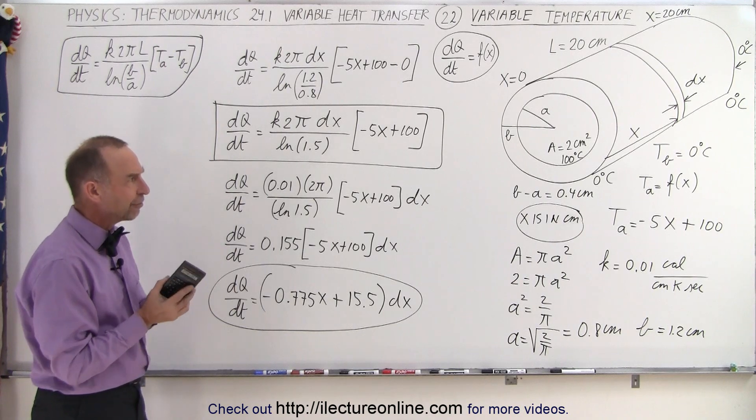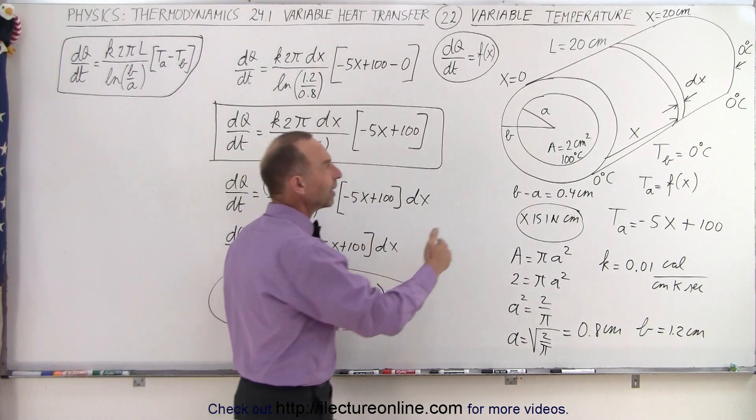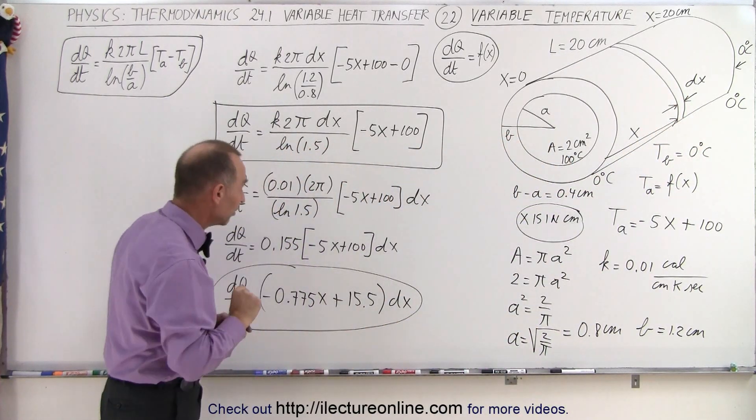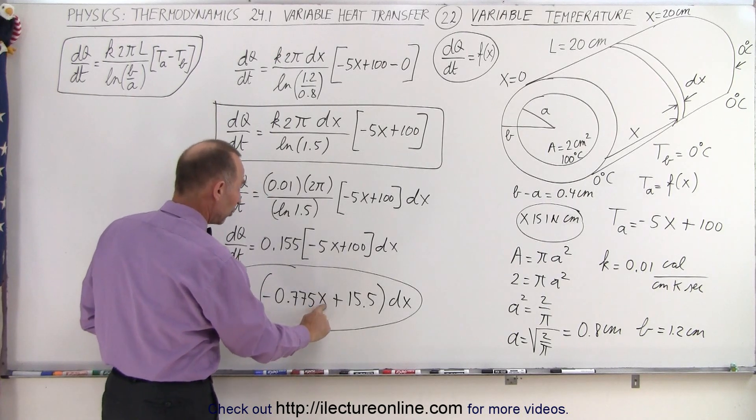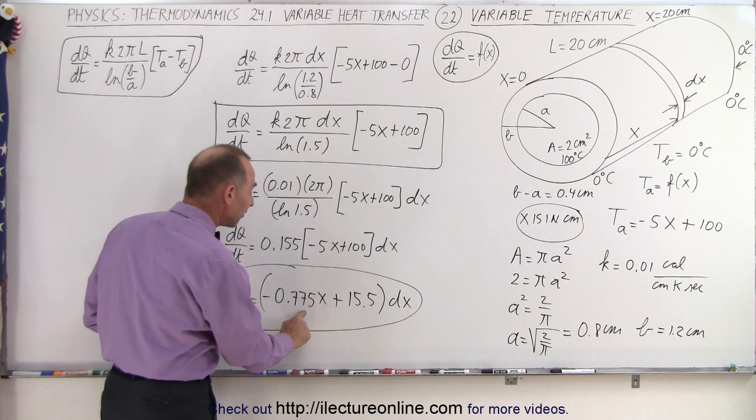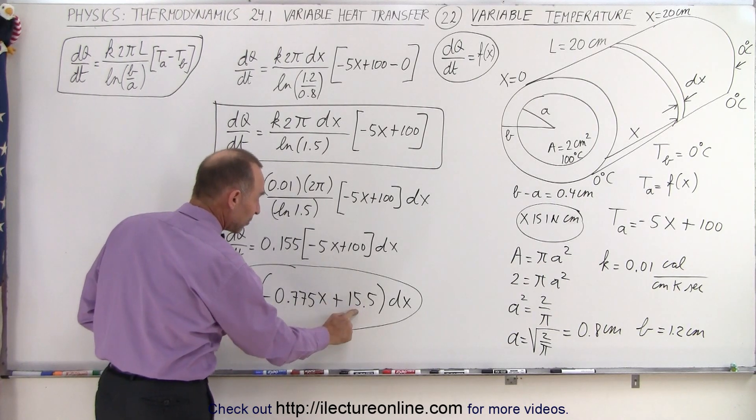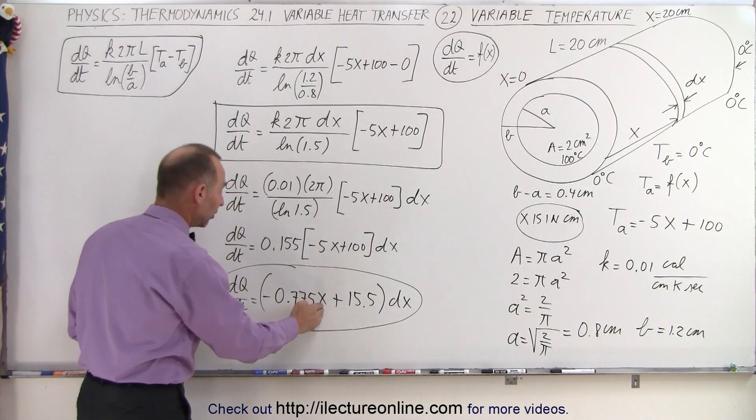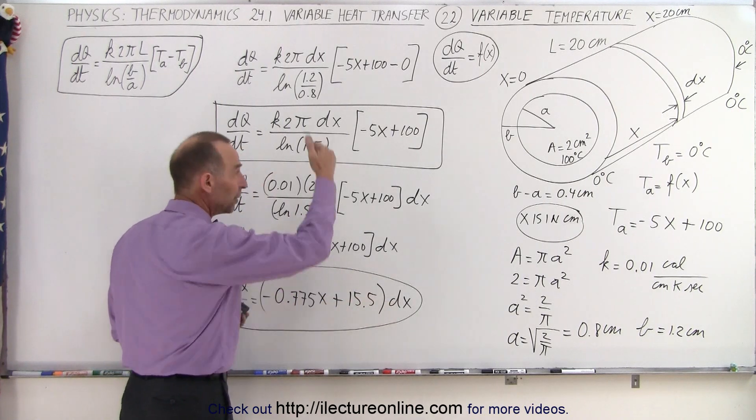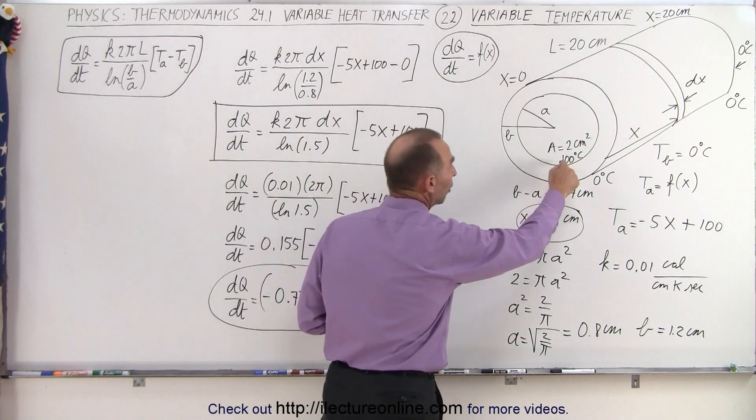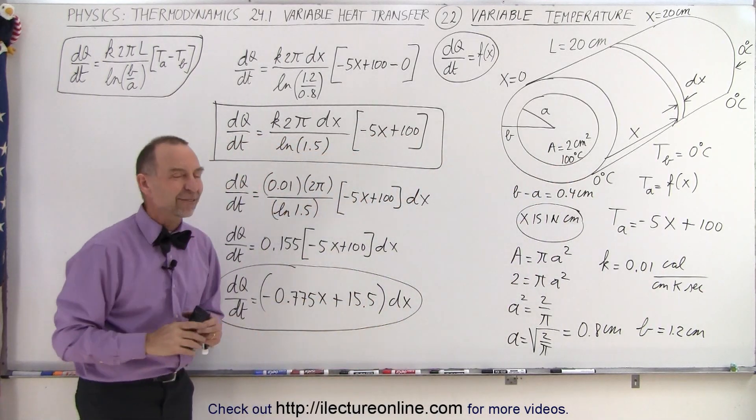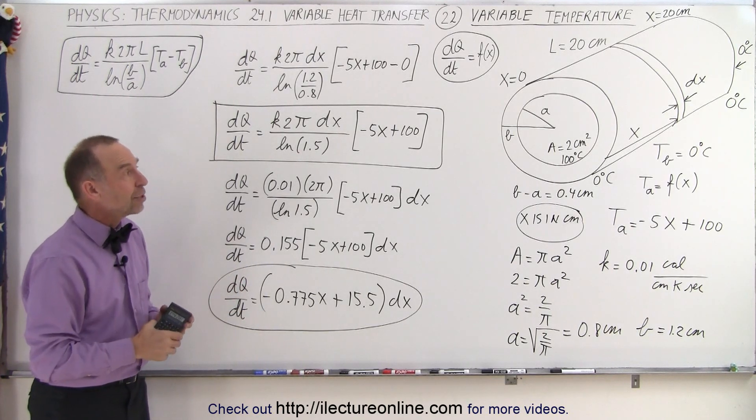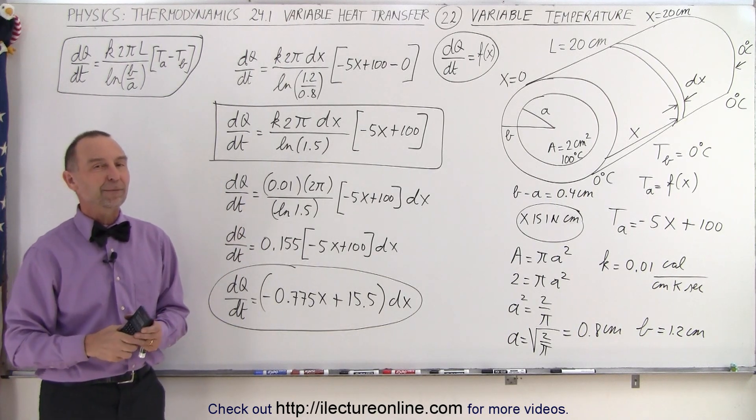Now let's see if this works out because at the very end when X equals 20, the difference in the temperature between the outside and inside is 0 and therefore dq/dt should be 0. So if we plug in X equals 20, 20 times this does indeed give us a negative 15.5, so negative 15.5 plus 15.5 is 0. We get 0 heat transfer at the very end, makes sense. And in the front when X equals 0, we get 15.5 times dx, that would be the heat transfer at the very front end of the cylinder where the difference is 100 degrees centigrade. So here's a much nicer equation expressing the dq/dt as a function of position along the pipe, and that's how it's done.